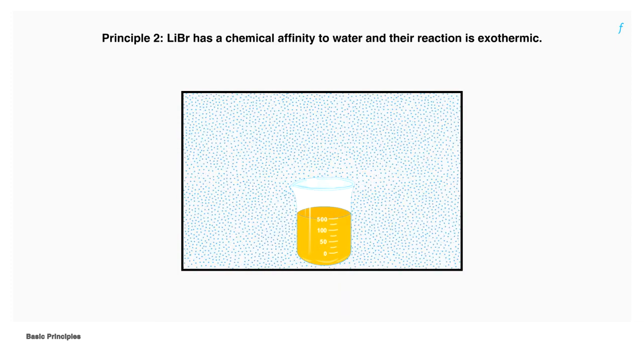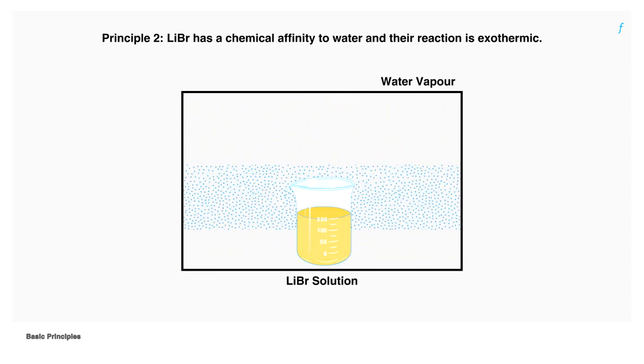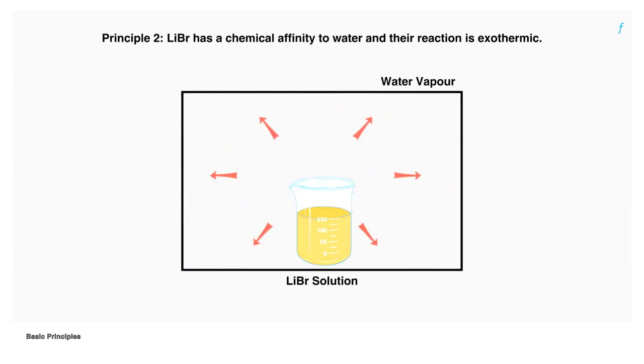Lithium bromide has a chemical affinity to water. That is, it will easily bond with water as soon as it is exposed to it. This process, that is the absorption of water vapor by lithium bromide, is exothermic. That is, it releases heat.